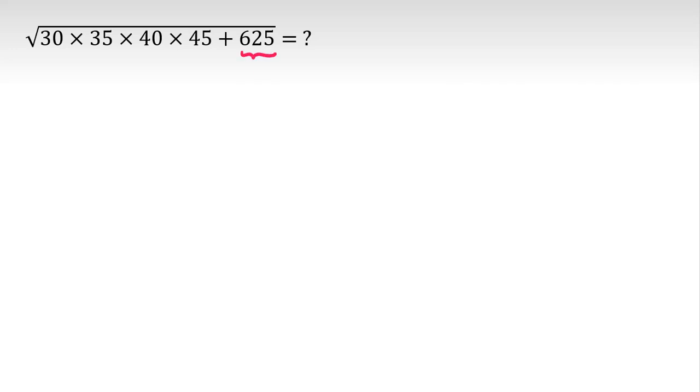So 625 is 5 to the power of 4, or 25 squared. You should memorize 1 squared to 31 squared, all squared numbers up to 1000.